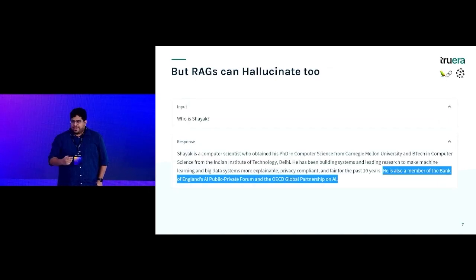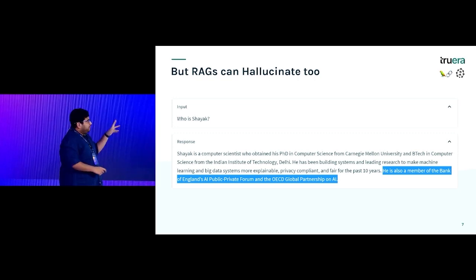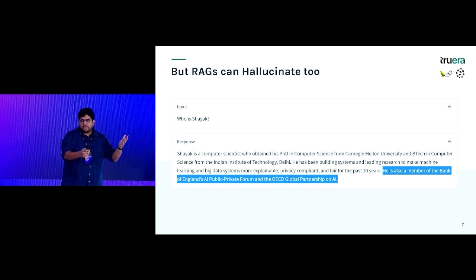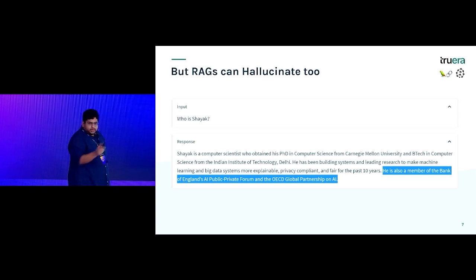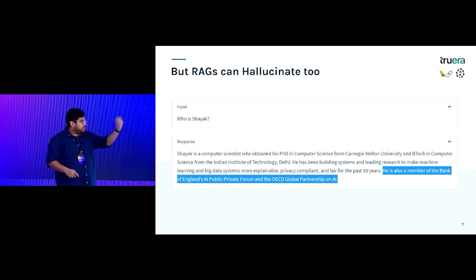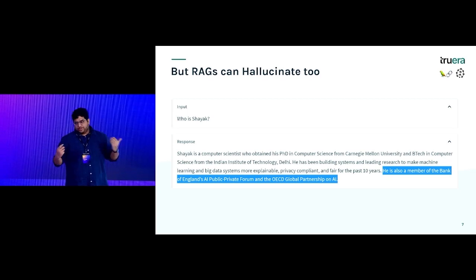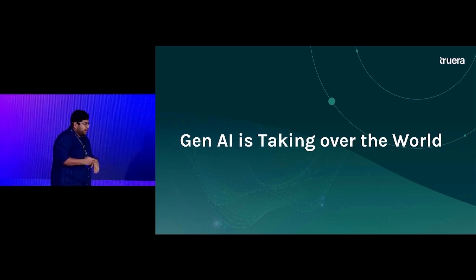Unfortunately, RAGs can also hallucinate. I tried using a RAG with our internal co-founders' articles, retrieved relevant chunks, and sent them to the LLM to answer who Shayak is. It got some things right — PhD from such-and-such university, building systems — but then claimed he's also a member of the Bank of England, which as far as I know is not true. So just because you started using RAGs doesn't solve the problem or remove the need for LLM evaluation.